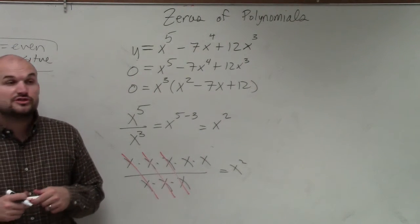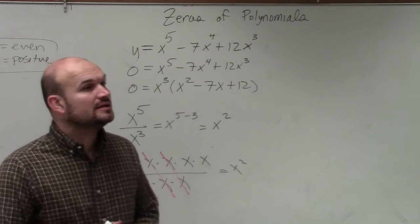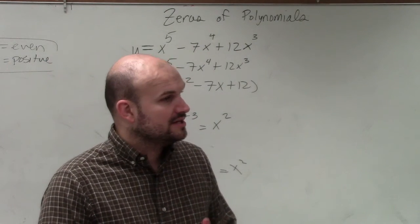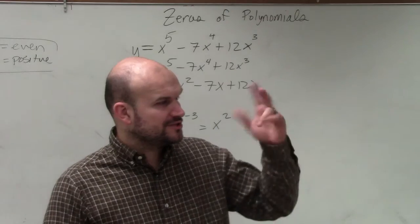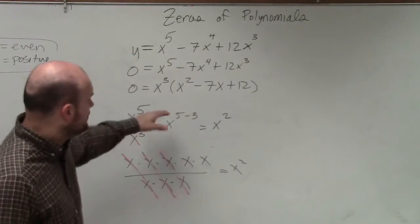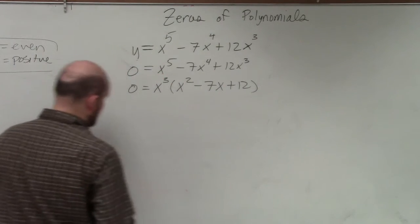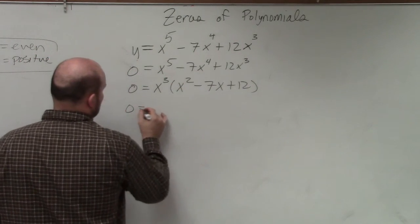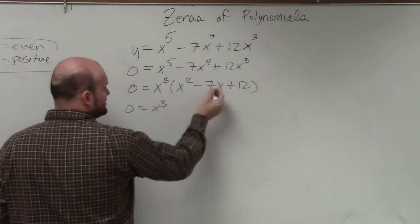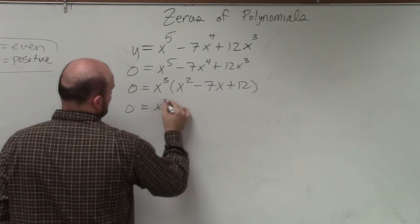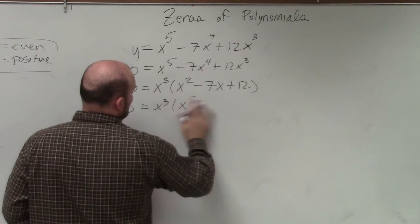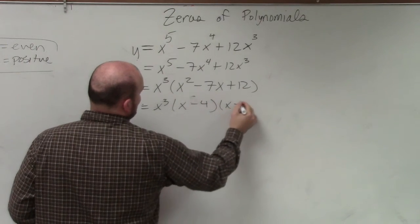OK? So just remember when you're dividing, especially when you guys are dividing out monomials with your powers of x, just make sure you subtract the powers. So now I just complete the zero product property here. I get 0 equals x cubed. I can factor, let's just factor this out, x minus 4 times x minus 3.